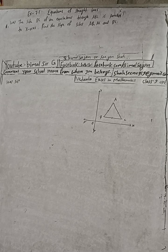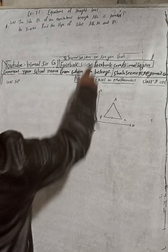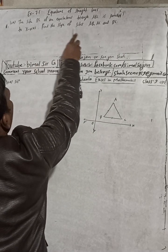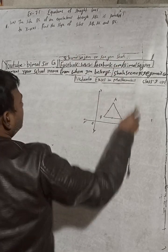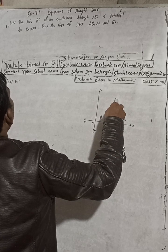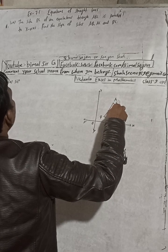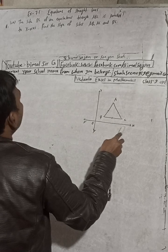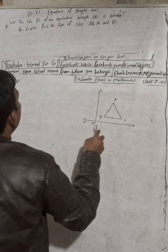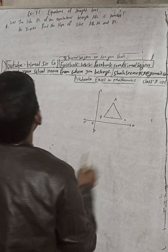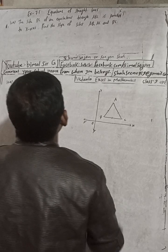The question is: the side BC of an equilateral triangle ABC is parallel to the x-axis. Find the slope of sides AB, AC, and BC. So BC is parallel to the x-axis.